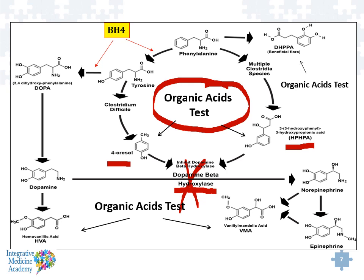In the presence of Clostridium difficile, the tyrosine is used to make more 4-cresol. Another influence on this system is BH4 — tetrahydrobiopterin — because it is a cofactor in the conversion of phenylalanine to tyrosine as well as tyrosine to DOPA.